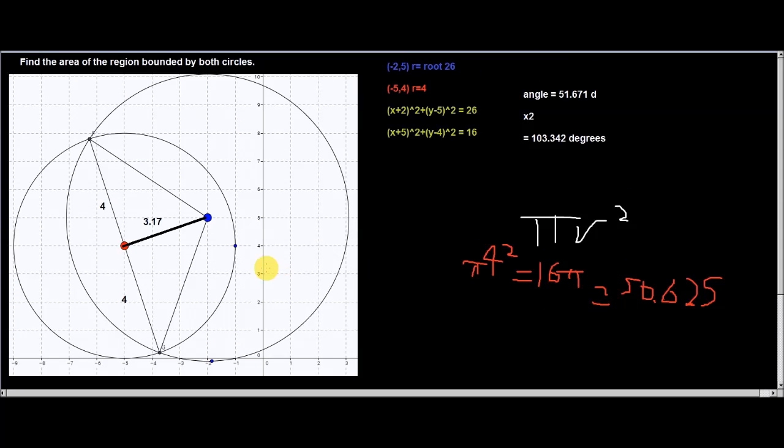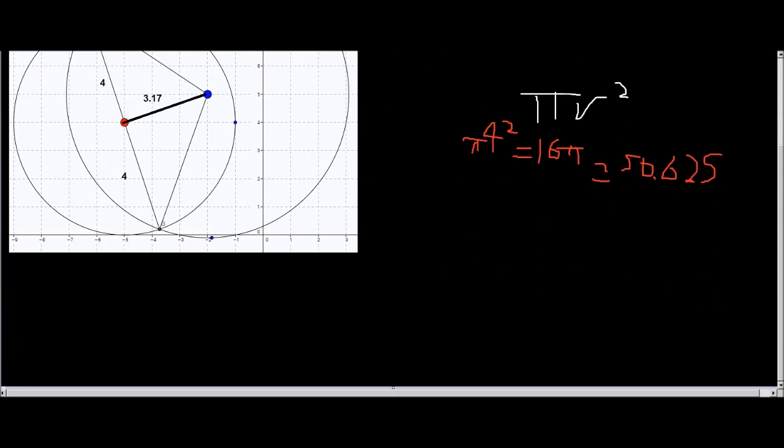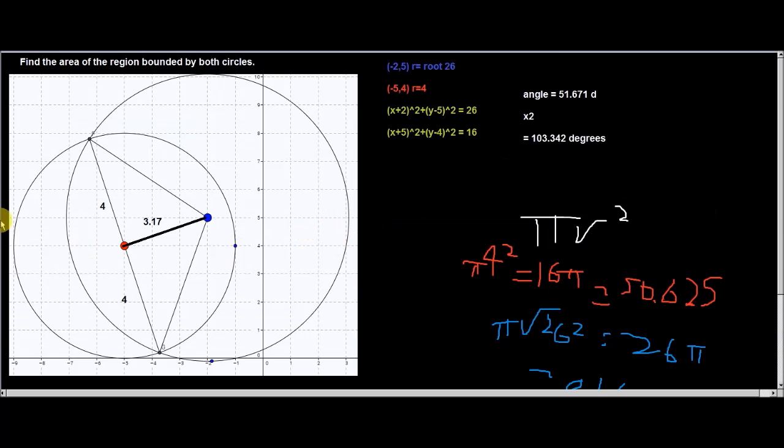To find the area of the other circle, it's the same thing but just π(√26)². I do that on the calculator and get 26π, which is the exact answer. The approximate answer is 81.681. That's how we find the area of both circles.